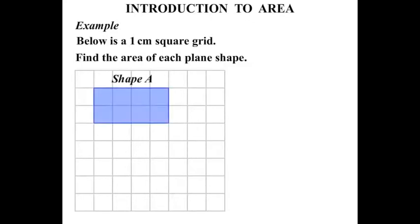Shape A firstly is a rectangle. Let's just count how many squares it takes up. One, two, three, four, five, six, seven, eight. So we can say that shape A, the area is eight square centimeters.